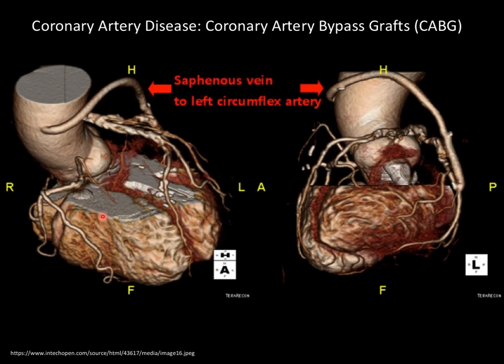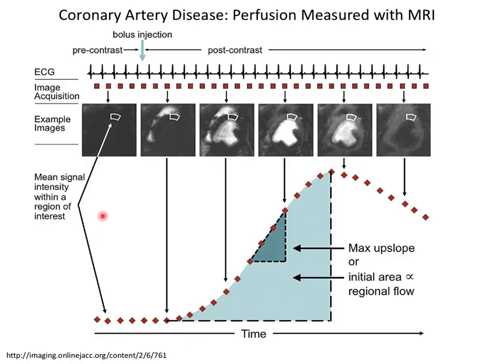Going back to imaging: to decide who should get CABG or a stent, you need to understand whether flow has been reduced through the lesion. Ideally if you see a lesion on X-ray or CT, you want to know if it's a critical stenosis — meaning blood flow will drop under stress. A number of perfusion imaging techniques are available to assess this.